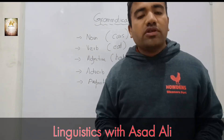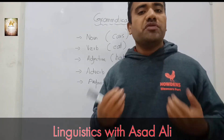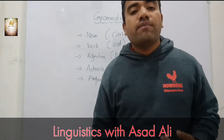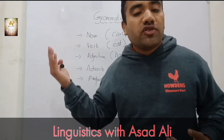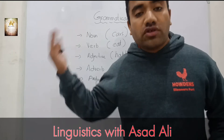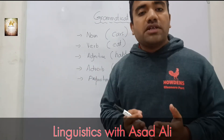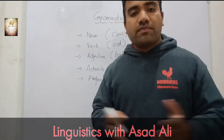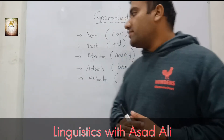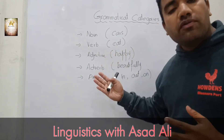The third one is the adjective. What is adjective? Adjective denotes states. When I say I am happy, this is my state. When you say you are sad, this is your state. If someone says that he or she is confused, this is his or her state. Adjective denotes the states. This is the third grammatical category.